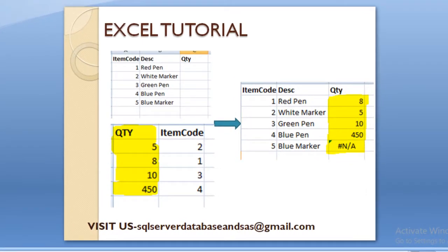If we had the item code column on the left-hand side and the quantity column on the right-hand side, we could simply apply VLOOKUP as discussed in our previous session. But here we have a totally different scenario. VLOOKUP cannot be applied when the common columns are available on the right-hand side, so we have to apply the INDEX and MATCH function to get the output.